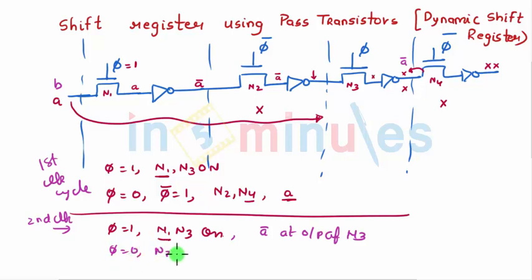Now again when phi goes to 0, N2 and N4 turn on. So N2 will take B bar because B was passed and this inverter got B bar, so B bar came at the input of N2. At the input of N4 was A bar, which because phi bar is 1, phi is 0, will pass this A bar here.